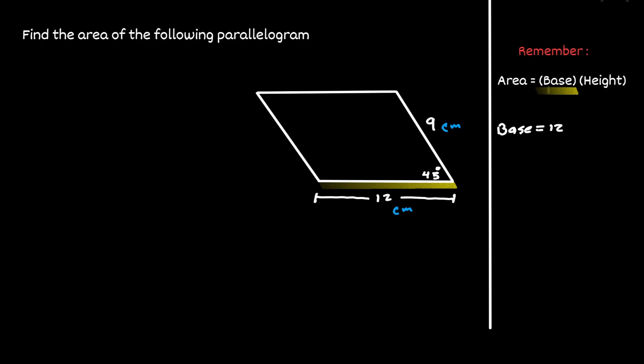Now we need to find the height. Notice that we have the value of the angle on the bottom left-hand side, which is 45 degrees. Let's choose this vertex in our parallelogram and draw a vertical line to it. We can create a right triangle, and the value of this vertical line is what we're going to define as the height.